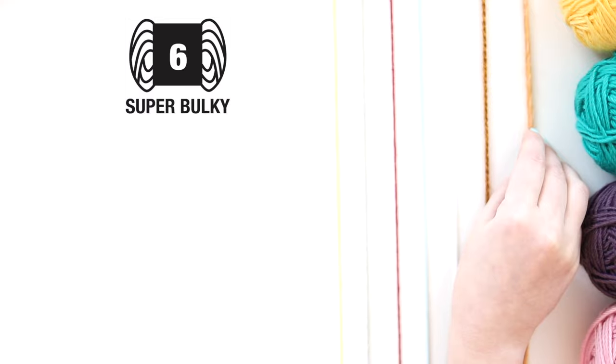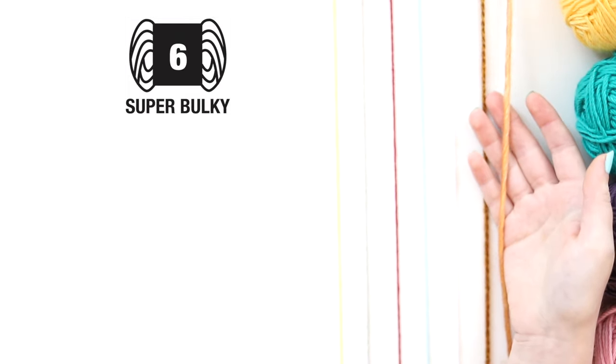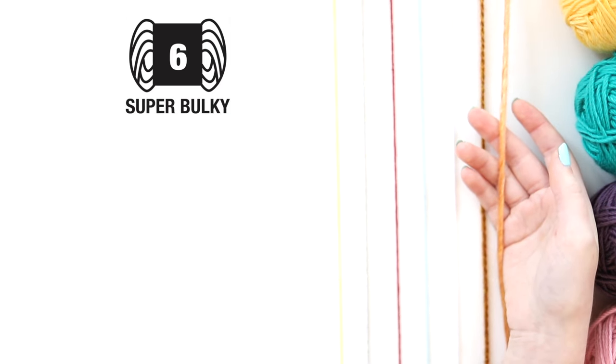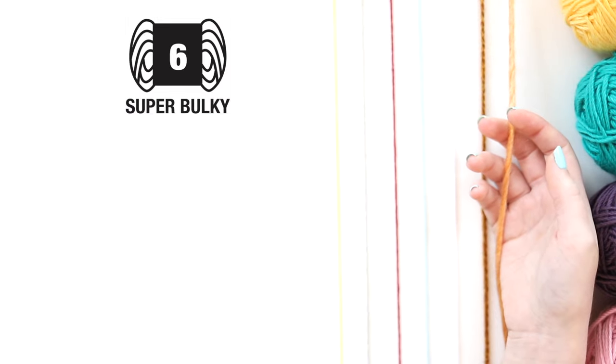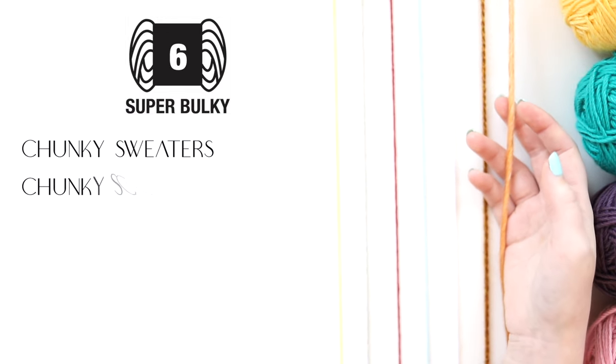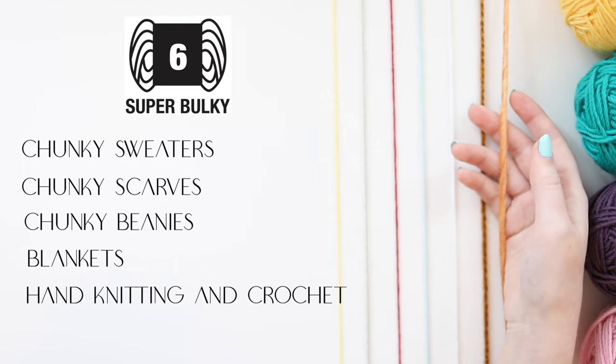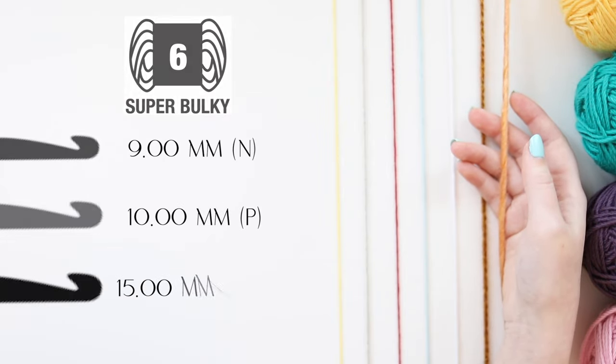And last but not least, we have a weight six yarn, also known as a super bulky or super chunky yarn. It fits its description pretty well. Some people get creative with this and they'll make pretty chunky garments that look super cozy, so you do whatever you want with it, but a lot of people will use it mostly to make blankets. Also, you can use it for hand knitting or hand crochet if you'd like as well. Its general recommended hook sizes are a 9mm, a 10mm, and a 15mm.